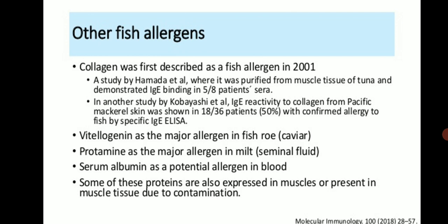Other fish allergens: Collagen was first described as a fish allergen in 2001 in a study by Helmeda et al., where it was purified from the muscle tissue of tuna and demonstrated IgE binding in 5 to 8 patient sera. In another study by Colbacea et al., IgE reactivity to collagen from Pacific mackerel skin was shown in 18 to 36 patients, and 50% were confirmed allergic to fish by specific IgE ELISA.